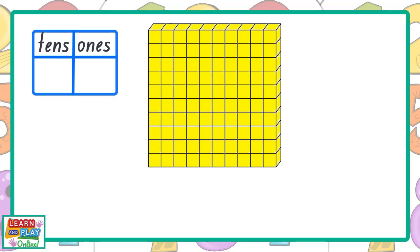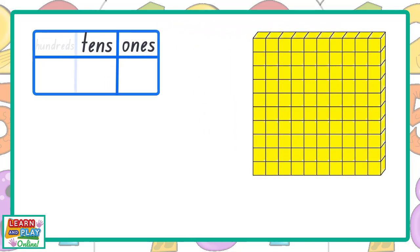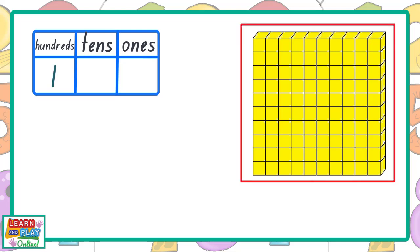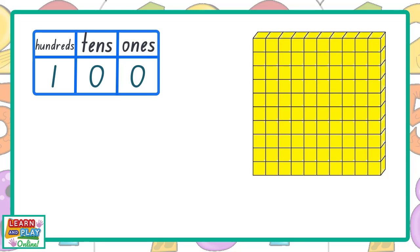This does also mean that we have to extend our table to include a hundreds column. Let's now record information in our table. We only have one hundreds block. Since we have no tens blocks, we are going to record the digit 0 in our table. This is also going to be the same for our ones blocks. Let's now look at the place value of each of the digits. The digit 1 is placed in the hundreds column, which means it is worth 100. This digit 0 is placed in the tens column and it has a value of 0 since there are no tens blocks. That's the same for this digit 0. Even though it is placed in the ones column, it has a value of 0 because there are no ones blocks.